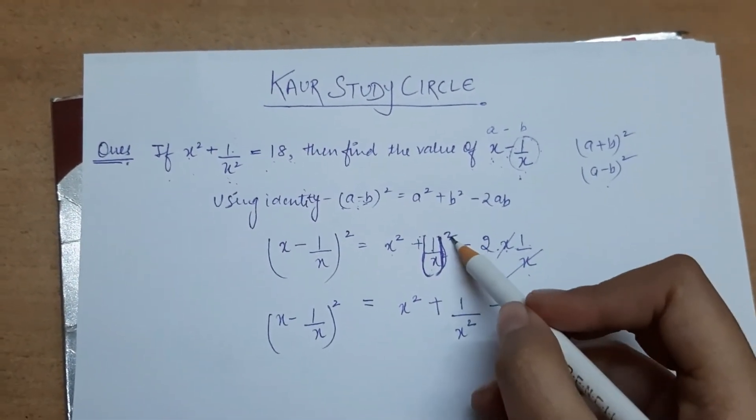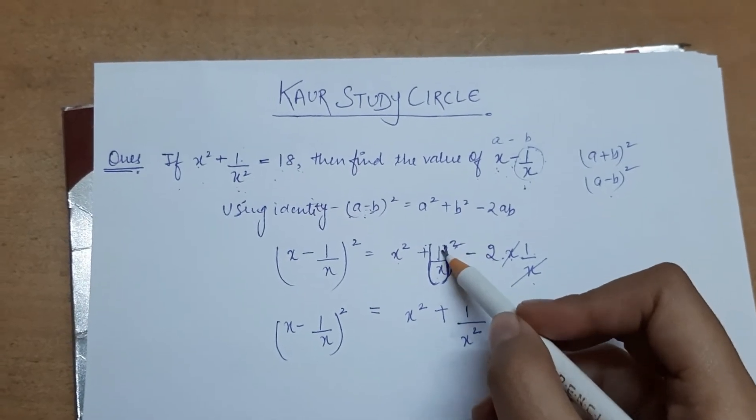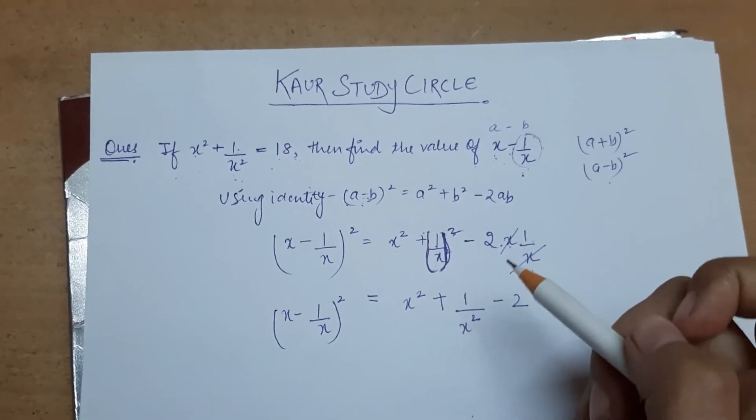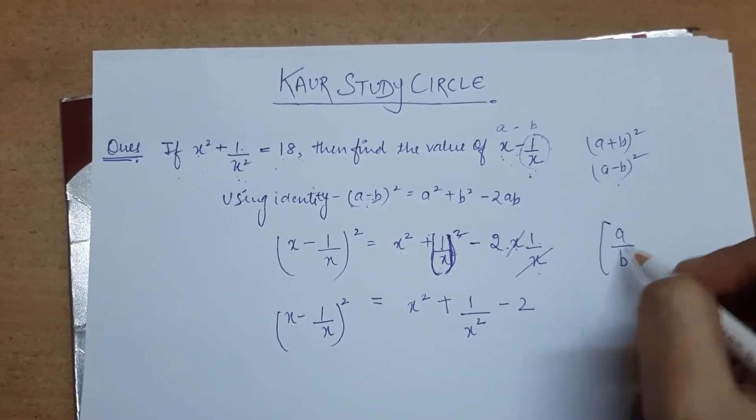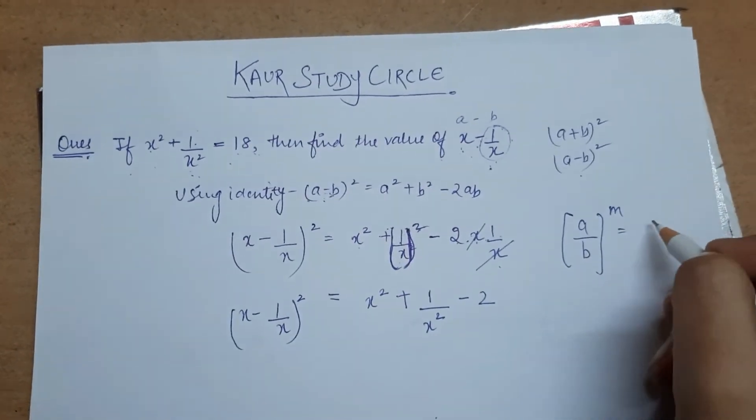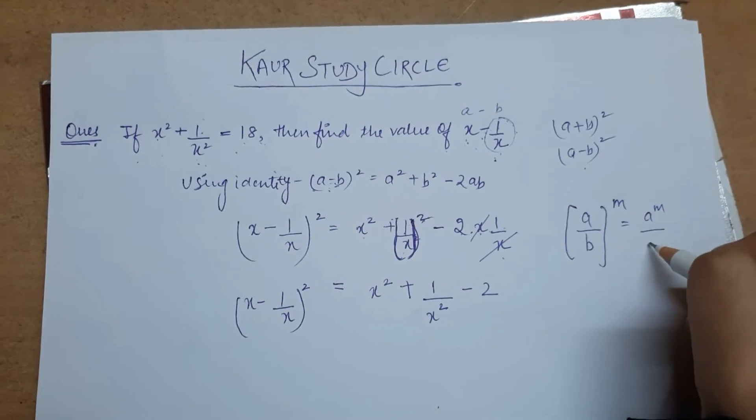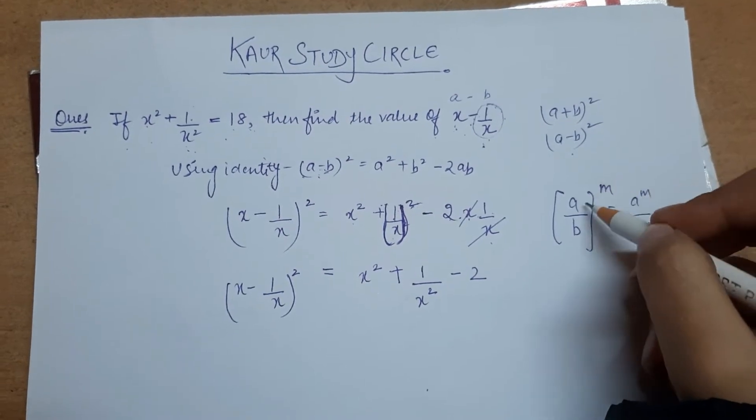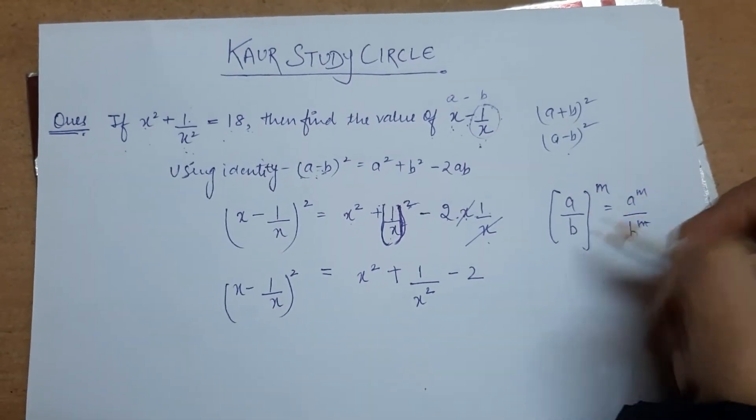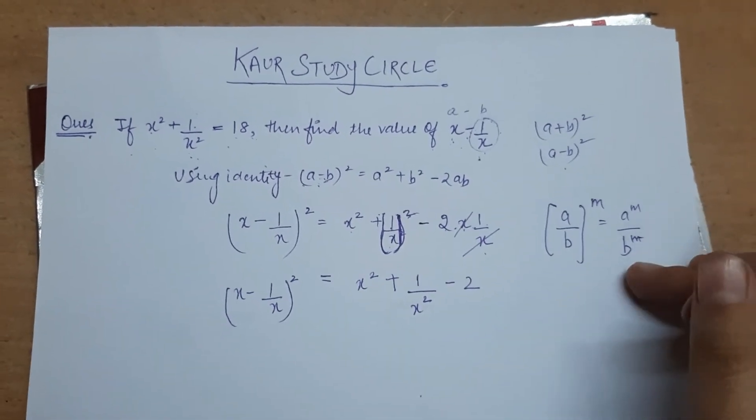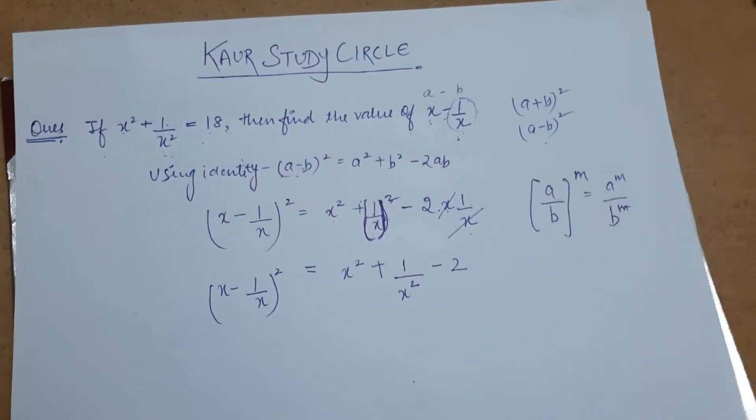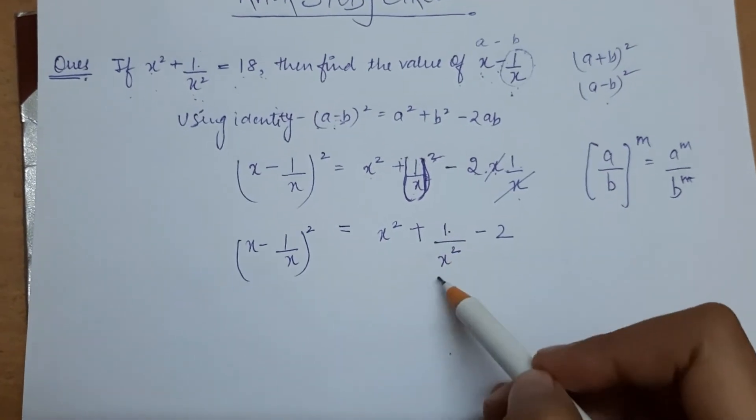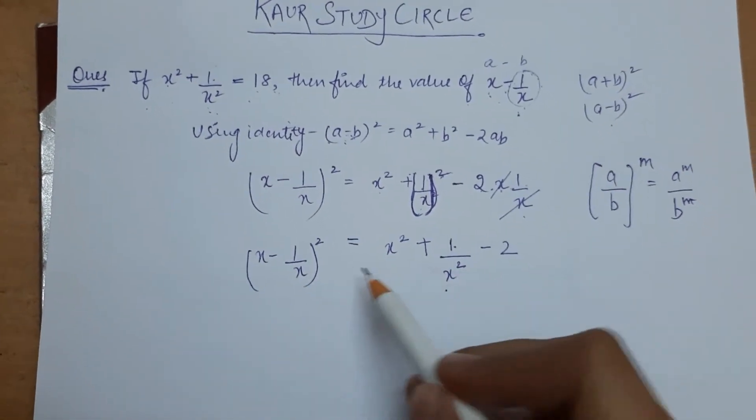Now what is left? Minus 2, 2 times 1 is 2. Now why are we taking the power 2 with the 1 and with the x? You will get this in chapter 1 - there's a property that if a upon b has a power, you give power to both numerator and denominator. It's like they had power together but they had a fight, so give them their own separate powers. So a gets its own power and b gets its own power. After giving power, 1 square is 1 and x square is x².